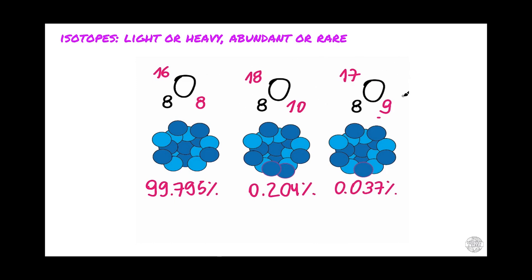We still have the remaining 0.037%, which has 9 neutrons. These are all stable isotopes of oxygen. We say that the most common one, with a mass of 16, is the most abundant, whereas the ones with masses of 17 and 18 are the rare isotopes. Because these have more atomic units, we say they are the heavy isotopes.